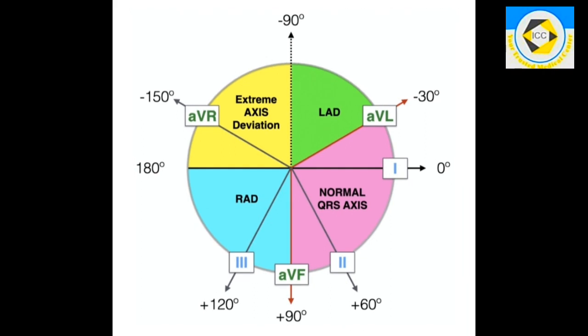QRS axis is considered normal when it is between minus 30 to plus 90 degrees and it is left axis deviation when it is between minus 30 to minus 90 degrees.